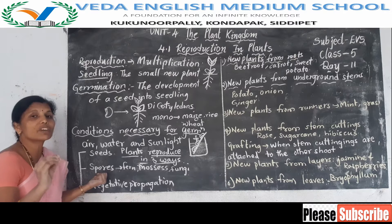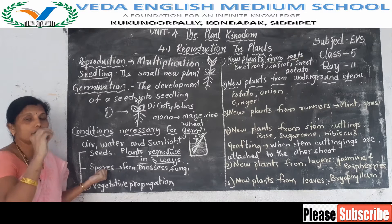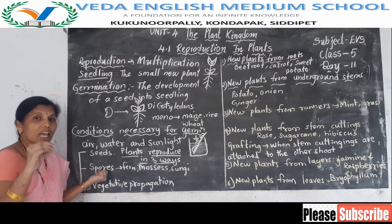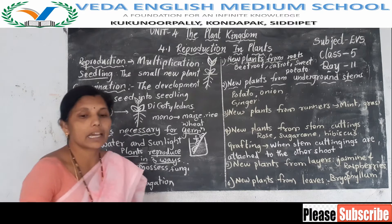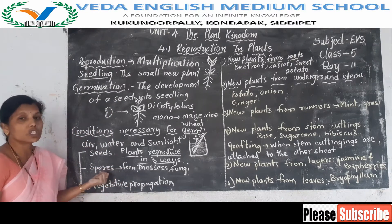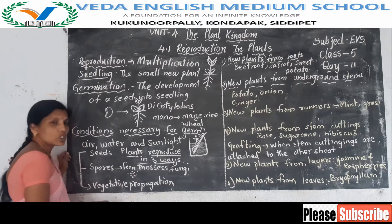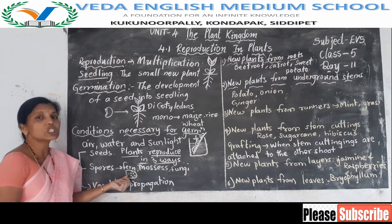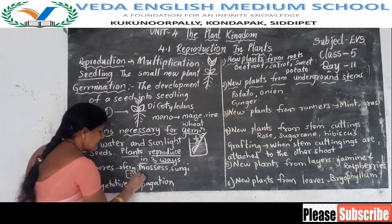Next is spores. Non-flowering plants do not have flowers, so they don't produce seeds. Non-flowering plants — like ferns, mosses, and fungi — reproduce through spores. These spores are very small in size and are covered in a small box-like structure called a spore box.